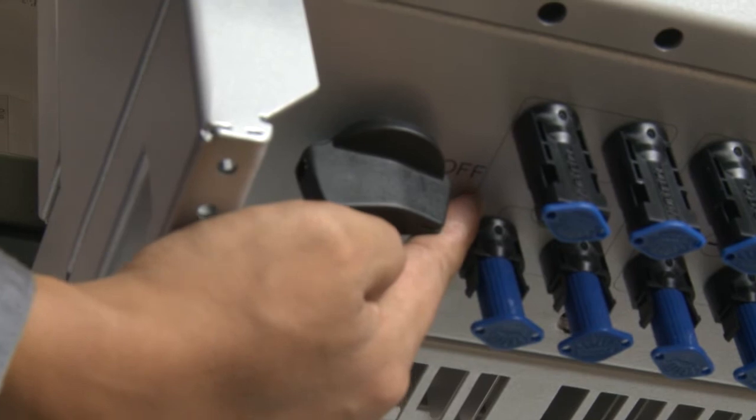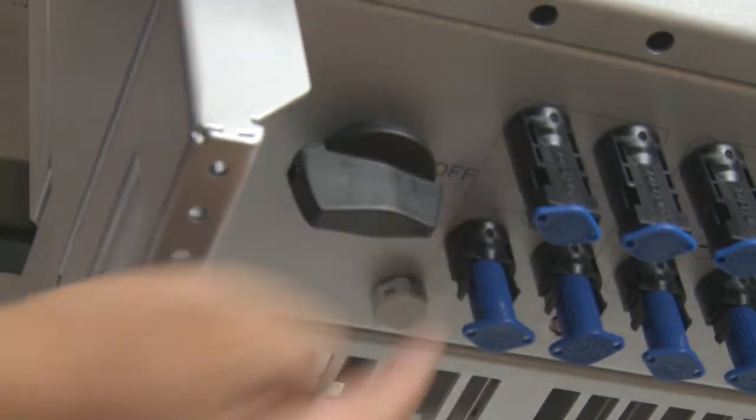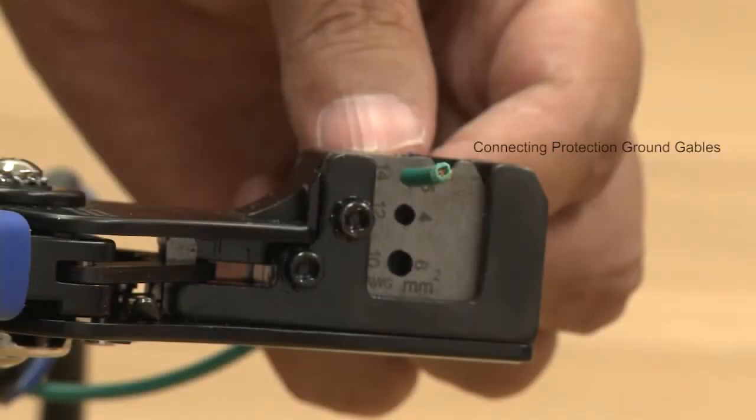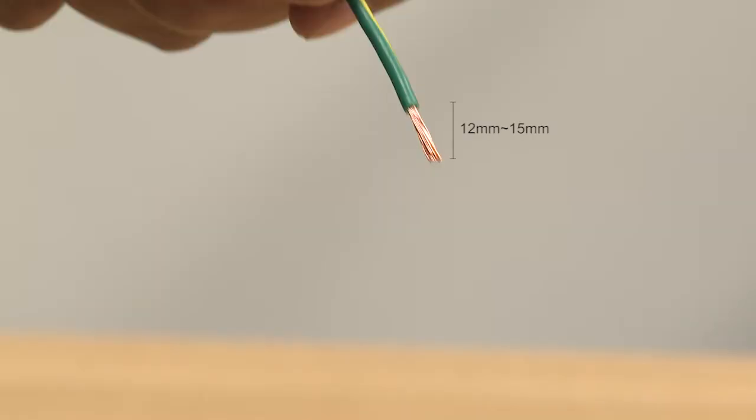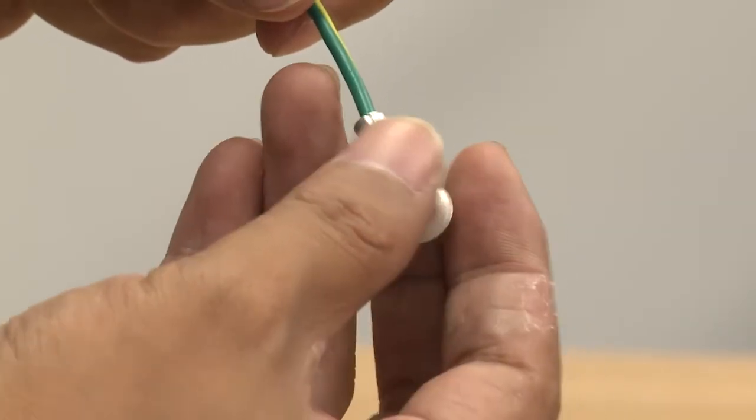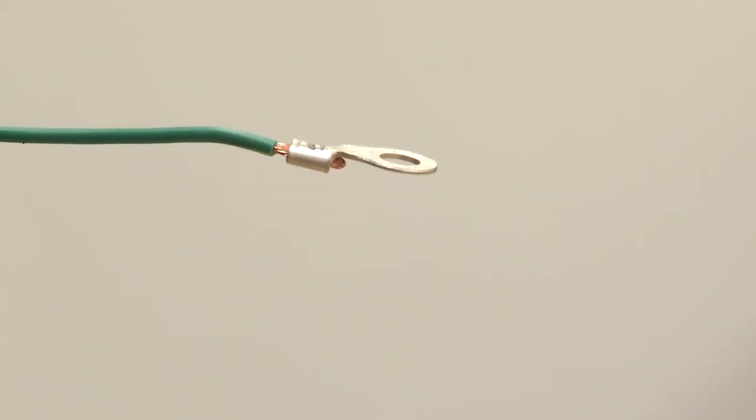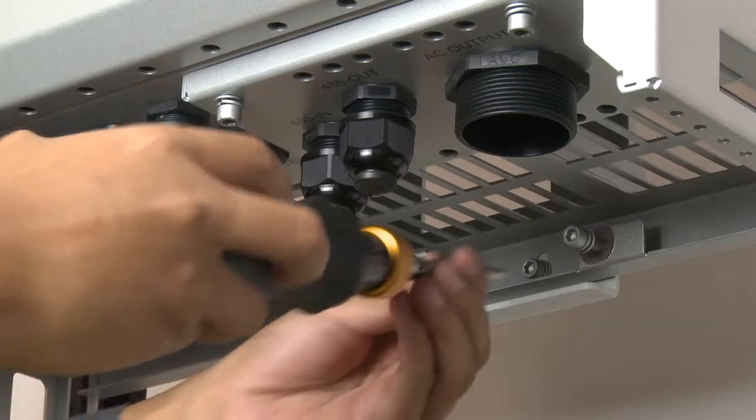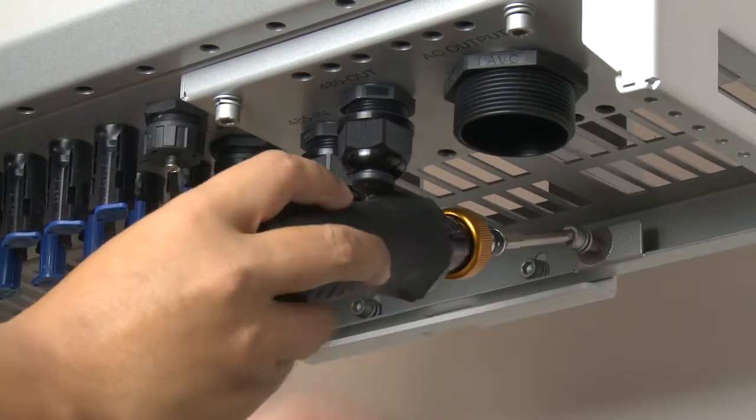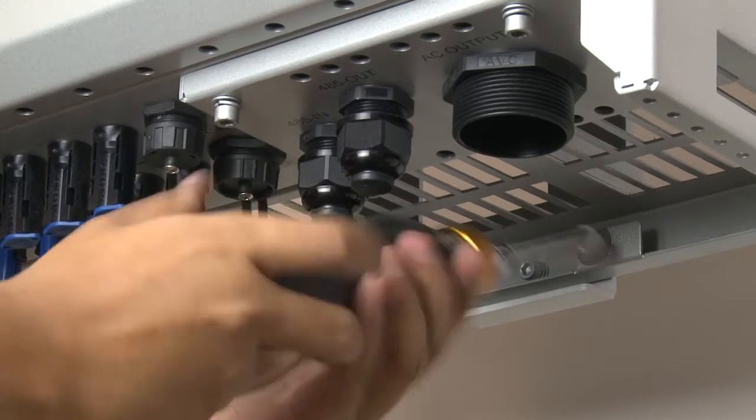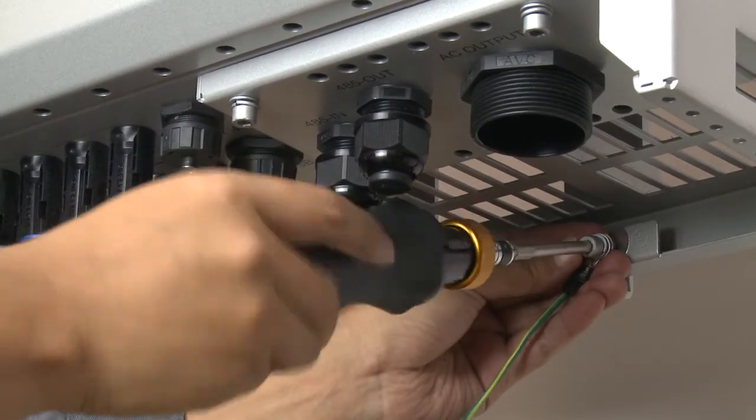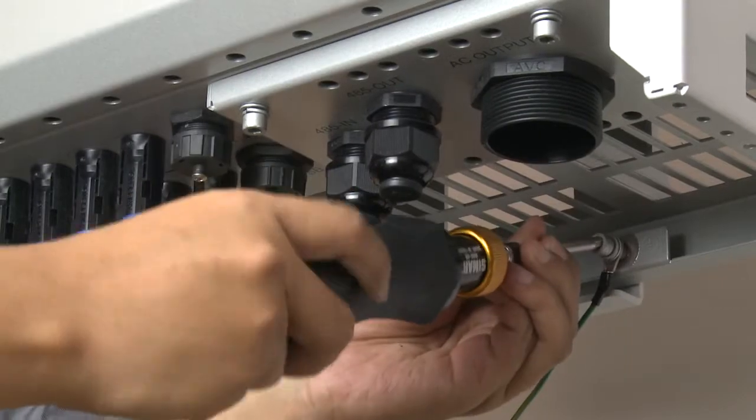Ensure that the DC switch is set to OFF. Remove an appropriate length of the insulation layer from the yellow-green earth wire using the wire strippers. Crimp the earth wire into the OT terminals using the crimping pliers. Remove the cross screw on the inverter with the Phillips screwdriver. Route the screws through the OT terminal and tighten it firmly with the Allen wrench.